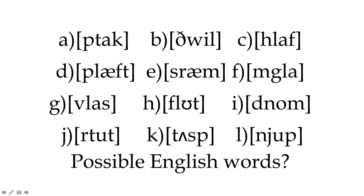'Sram' is not allowed — 's' and 'r' can't cluster together. 'Mgla,' meaning 'of the fog' in Russian, is definitely not allowed. 'Vlas' — 'v' and 'l' together are not normally allowed, although borrowings from Slavic languages like 'Vlasic' or 'Vlad the Impaler' may have taught some speakers this cluster. 'Dnom' and 'rtut' are clusters English speakers can't make. 'Tusp' and 'nyup' are possible English syllables — nothing in English phonotactics prevents them. These examples show that which consonants can form a cluster is what really matters.